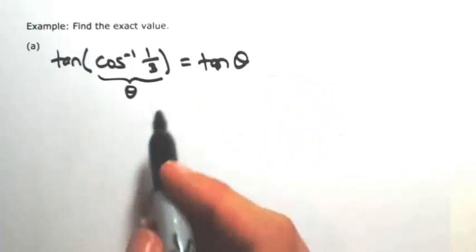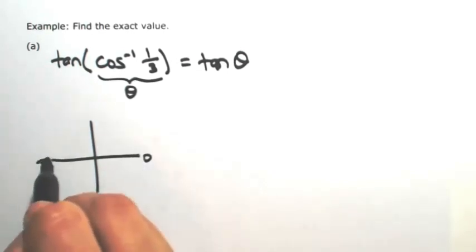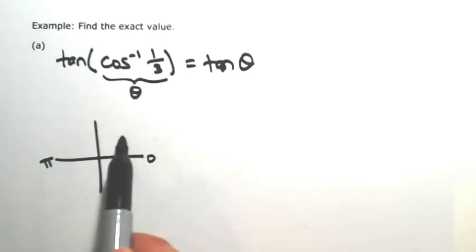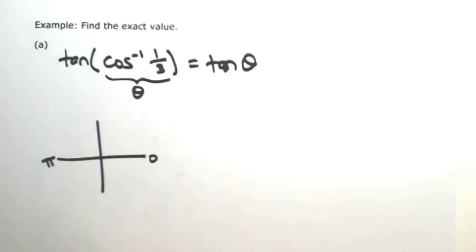Since we're talking about the inverse cosine, we have to keep in mind where we are restricted to. The angle of restriction of cosine was between zero and pi, so somewhere in either quadrant one or two. Since this is positive 1 third, it's going to be in quadrant one.